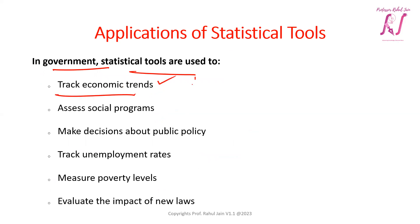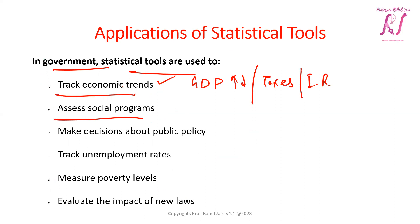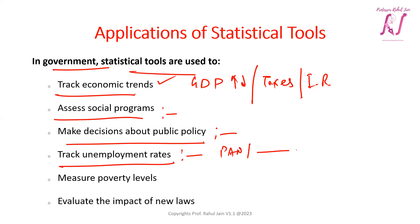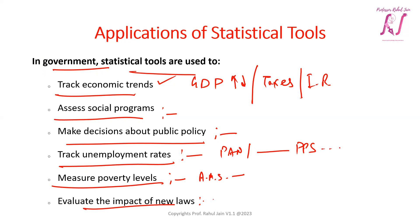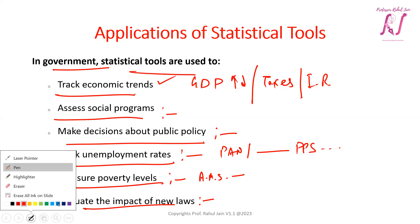In government, statistical tools are used for tracking economic trends such as GDP growth or decline, taxes, and interest rates. They are also used for assessing social programs, making decisions about public policy, tracking unemployment rates, measuring poverty levels, determining average and median salaries, and evaluating the impact of new laws.